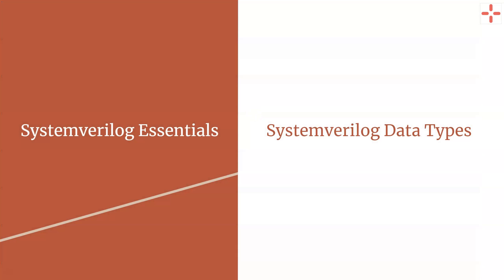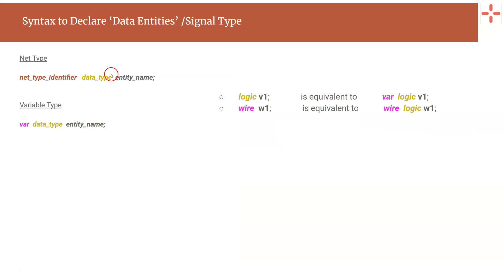I hope it is very clear that SystemVerilog data types are not equivalent to Verilog data types. In SystemVerilog, we call them data entity types or data objects — and those are nets and variables. A SystemVerilog net type entity is equivalent to a Verilog wire entity, and a SystemVerilog variable type is equivalent to a Verilog register type, which can save some value.